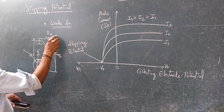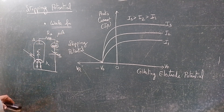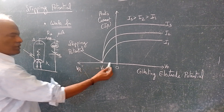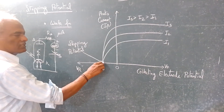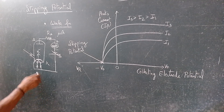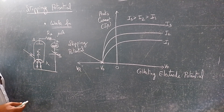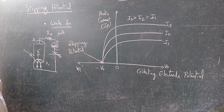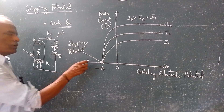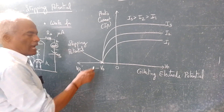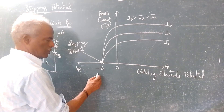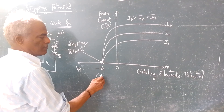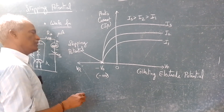What happens is when you reverse the voltage, at one particular voltage the photo current becomes zero — the cathode does not release any electrons. That potential is called stopping potential, and that potential is unique. For example, it can be minus 5, minus 25, or minus 20 volts — say minus 10 volts. The stopping potential is fixed for a particular material.